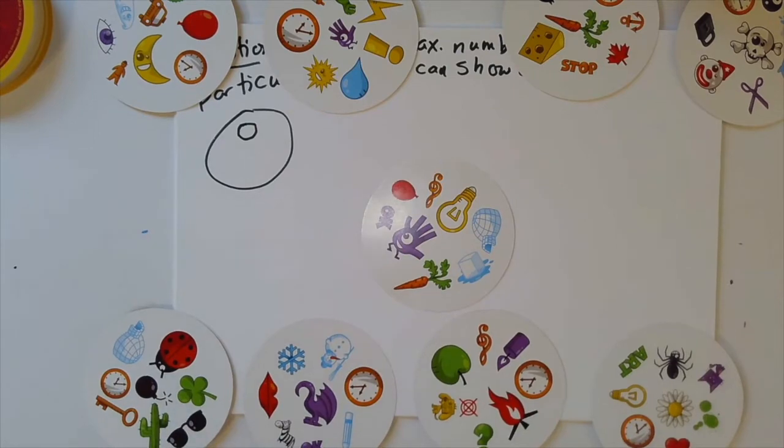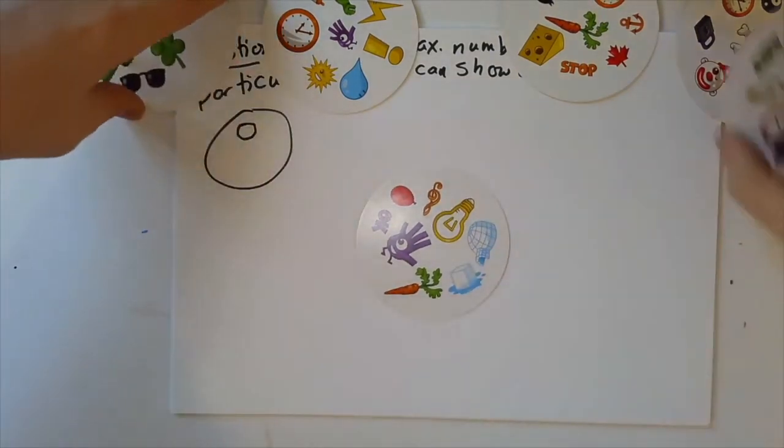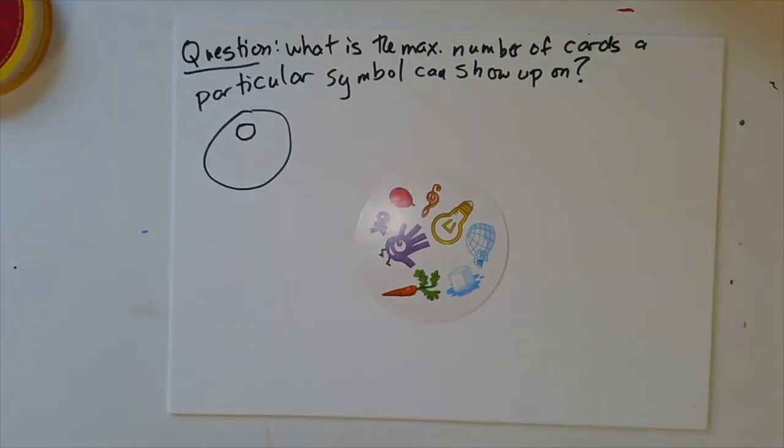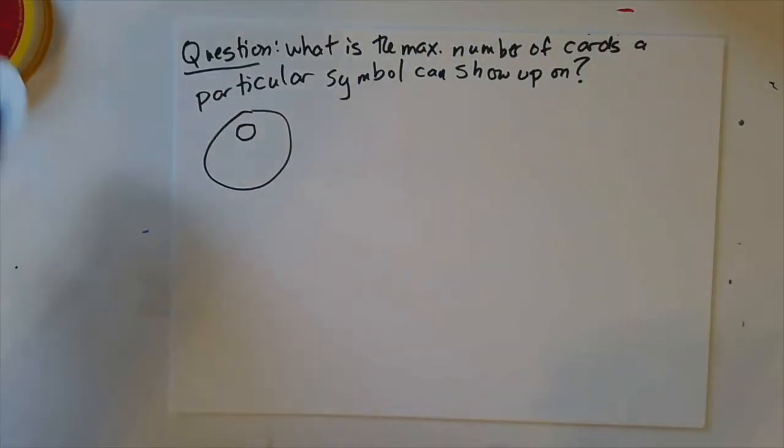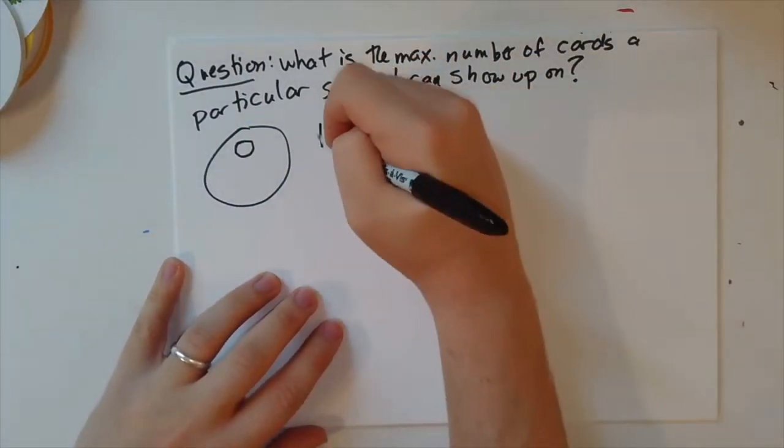And so that is a contradiction. And so that tells me that the answer to my question, what's the maximum number of cards a particular symbol can show up on, is that the maximum number is eight.